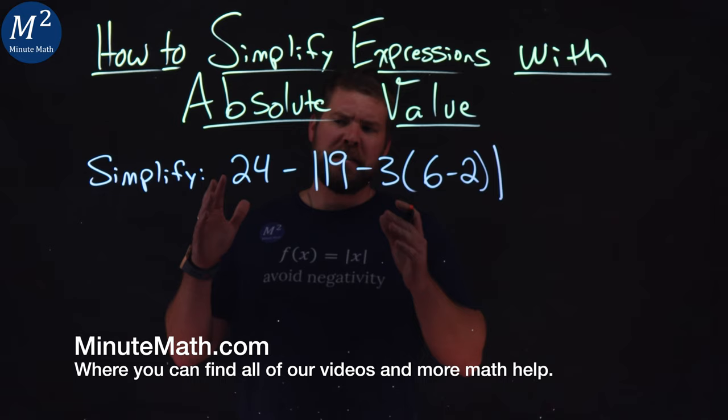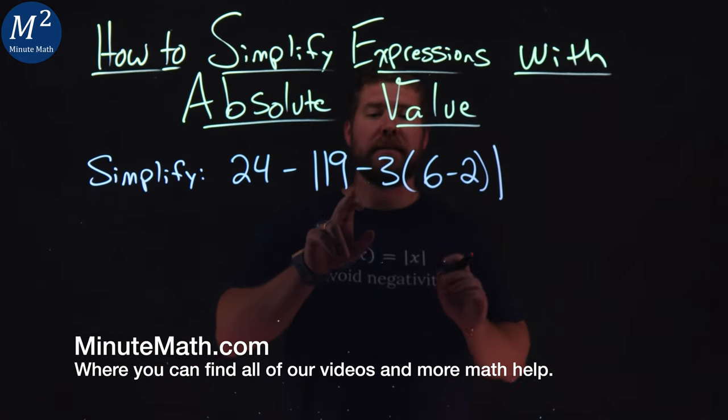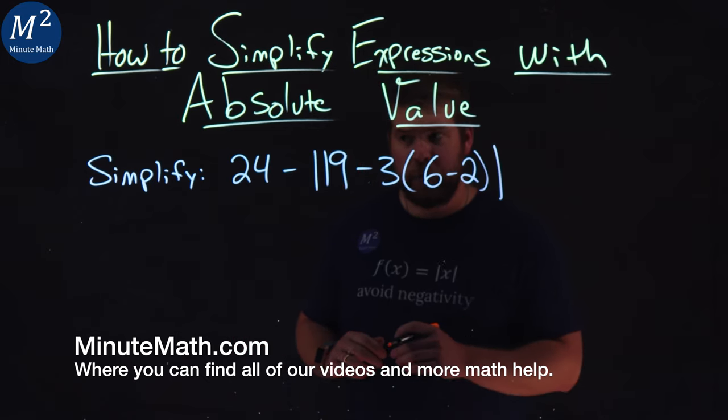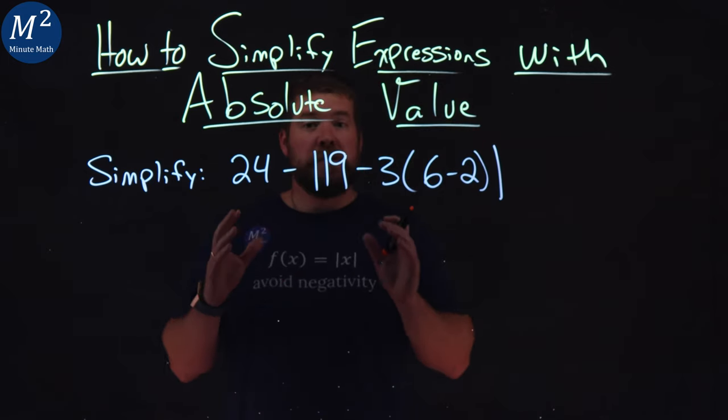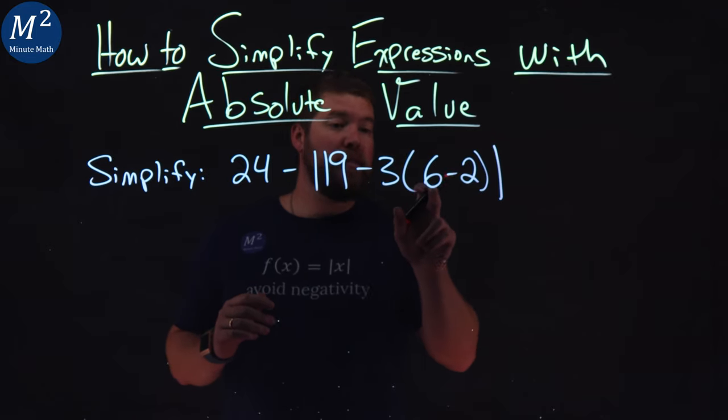We're given this expression here to simplify: 24 minus the absolute value of 19 minus 3 times (6 minus 2). Our order of operations still stand, and we have to take our time with this. We have to deal with this inner parenthesis first.